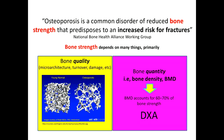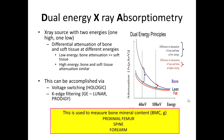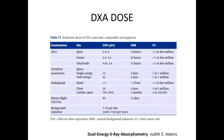60 to 70% of bone strength is dependent on bone mineral density, and this can be measured using DEXA — dual energy X-ray absorptiometry. DEXA is the most widely available and used technique to quantify bone mineral density and diagnose osteoporosis in clinical practice. It uses an X-ray source with two energies to differentiate between hydroxyapatite in bone and soft tissue, measuring bone density in the proximal femur, spine, and forearm. It is an extremely low-dose technique, equivalent to spending half a day in the sun.